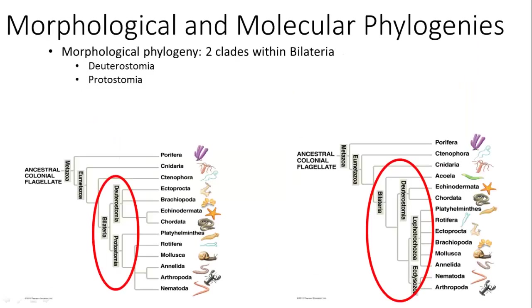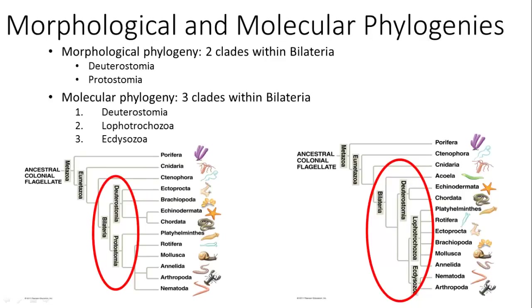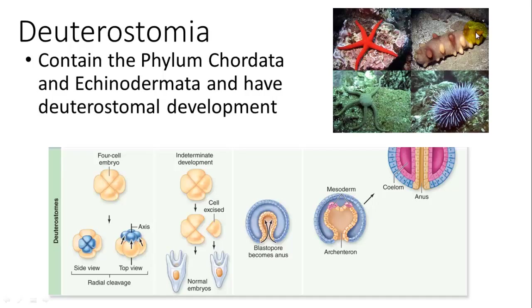Our morphological phylogeny has two clades within Bilateria, and the molecular one has three. We're going to ignore the morphological one and just talk about the molecular one.